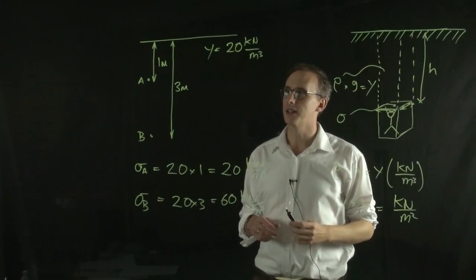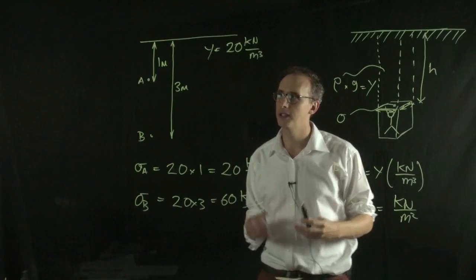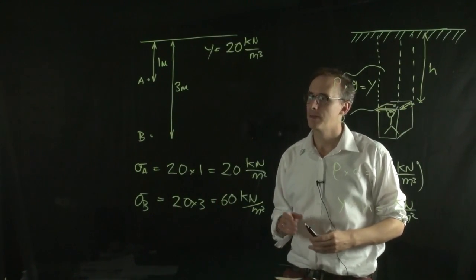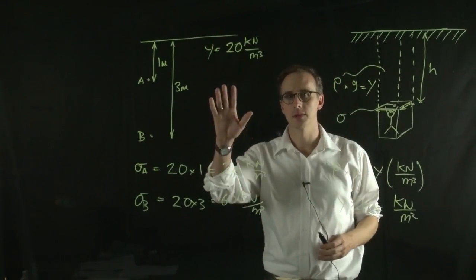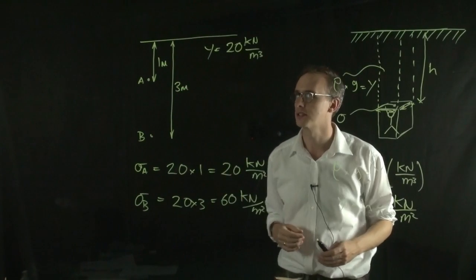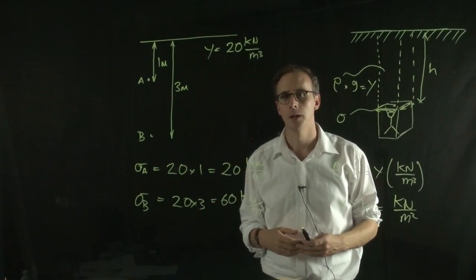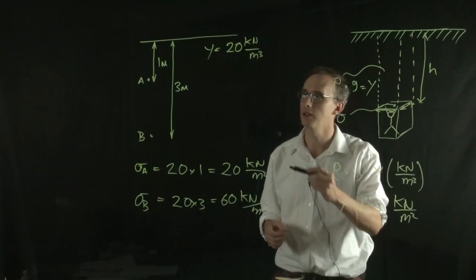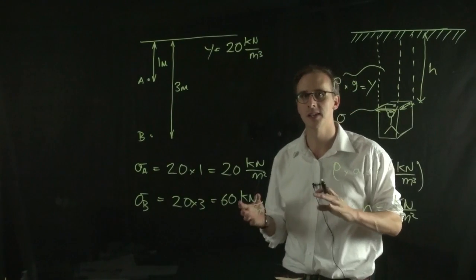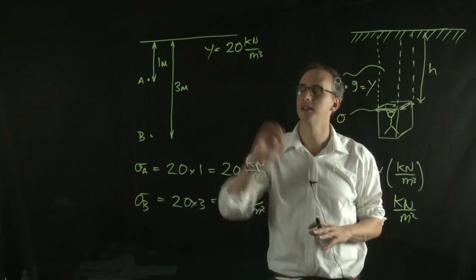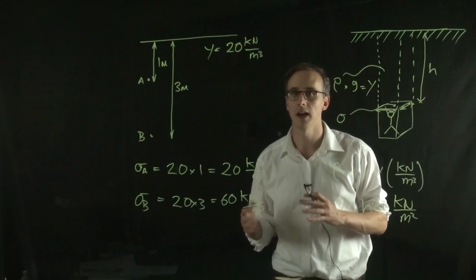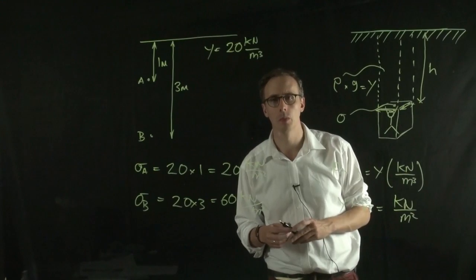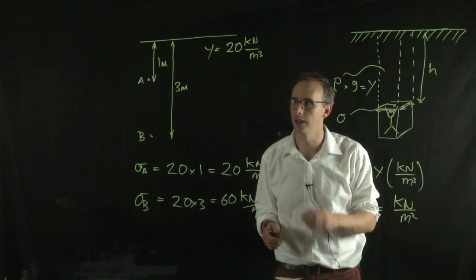This is quite a simplified example. Could you imagine any problems if we were looking at more realistic soils? This assumes constant unit weight throughout, but we know that bulk density increases with depth, so unit weight would also increase with depth — this is a simplification, and in some cases we use the average unit weight. What about water content? What effect do you think water content will have on the stress calculation?